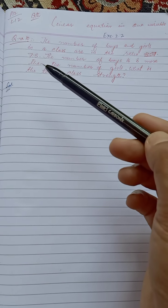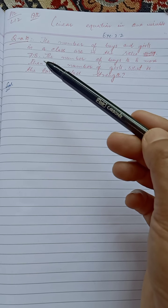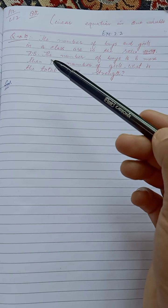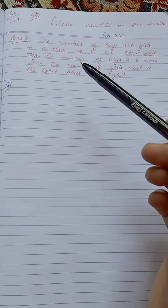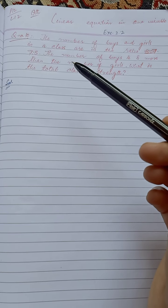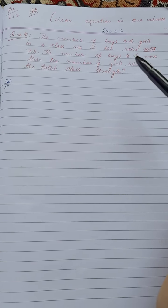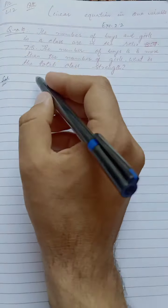The ratio of boys to girls is 7 to 5. The number of boys should be greater than the number of girls. So let's find the total class strength.